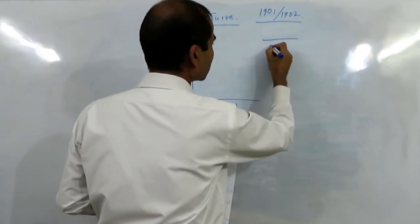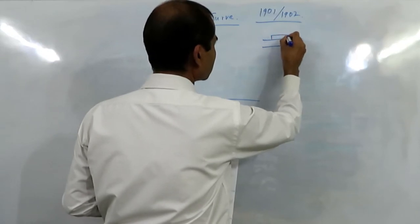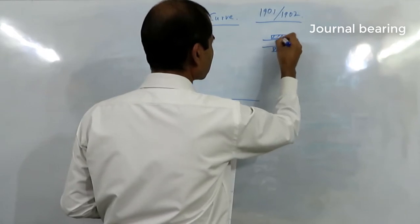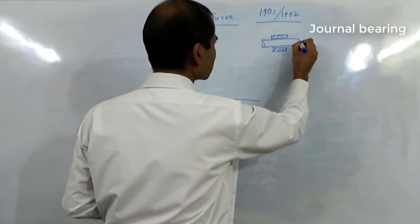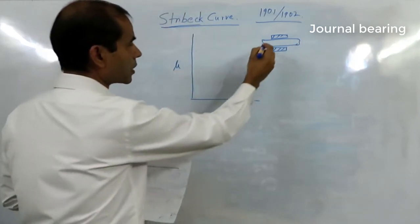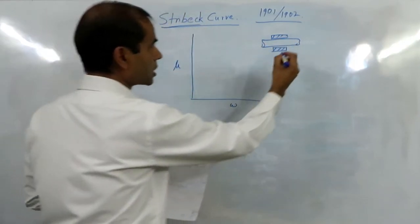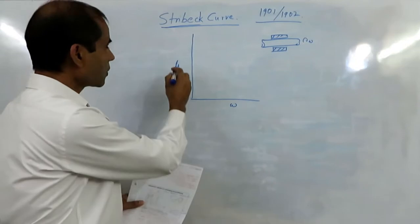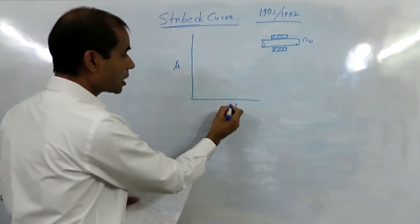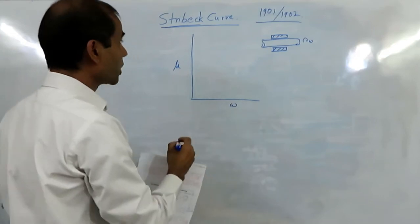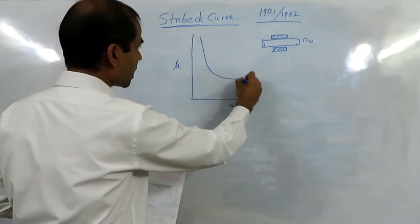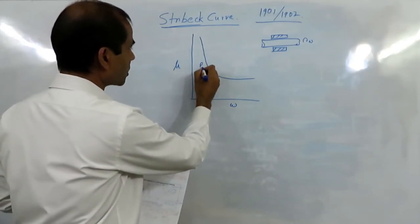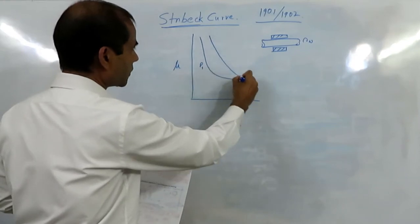For example, in a journal bearing, if this is the shaft and this is the bearing, and the shaft is rotating at an RPM of omega, he found that the coefficient of friction varies with omega or RPM. It has got some relation — something like this curve — and he found out that as we increase the pressure, there is a shift in the curve.